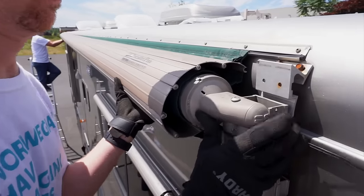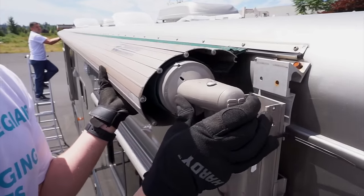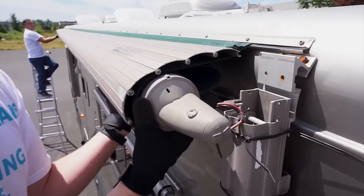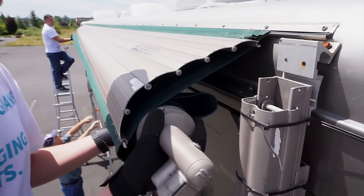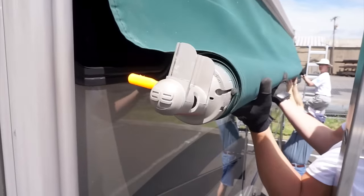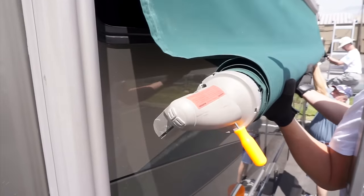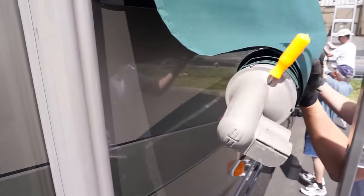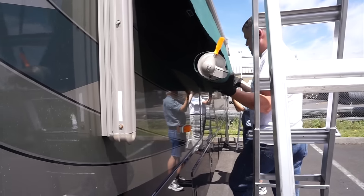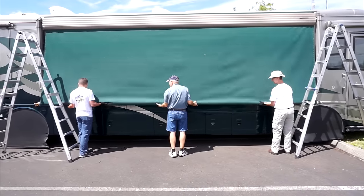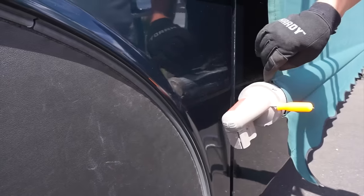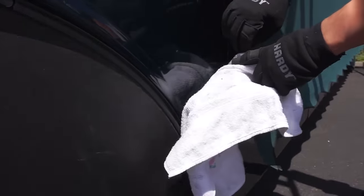With one person on each ladder, lift both ends of the roller tube out of the arms and begin unrolling the fabric down the side of the RV. Make sure to hold the roller away from the bodywork and protect the paint job from scratching as needed.